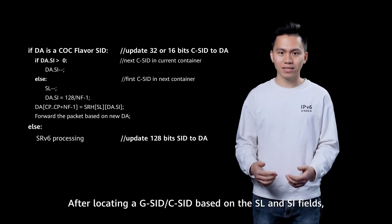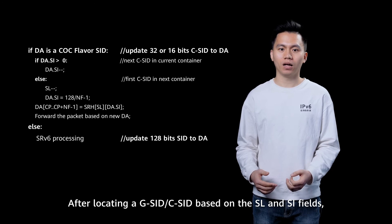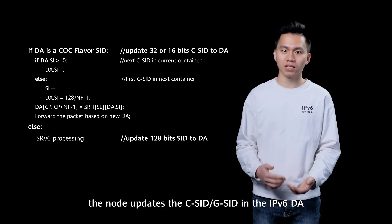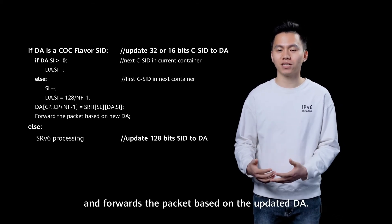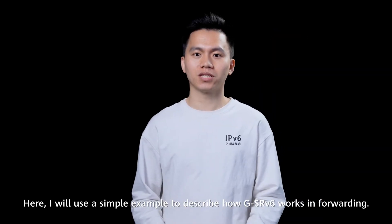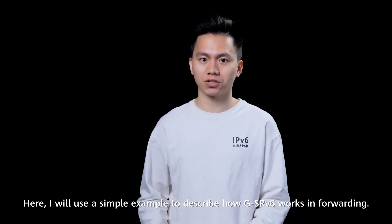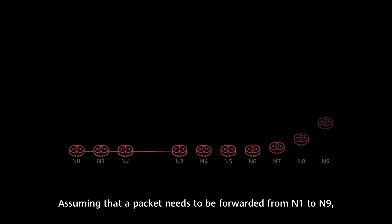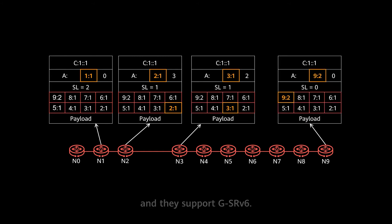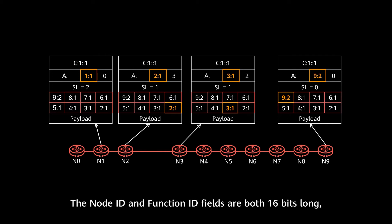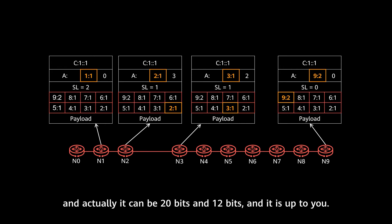After locating a G-SID or C-SID in the SRH, we can update the C-SID to the IPv6 destination address, and then forward the packet based on the updated destination address. I will use a simple example to describe how GSRV6 works in forwarding. Assuming that a packet needs to be forwarded from node 1 to node 9, and they support GSRV6. The common prefix of C-SID is 8::/64, and the Node ID and Function ID fields are both 16-bit long — though it can also be 20-bit and 12-bit; it's up to you.